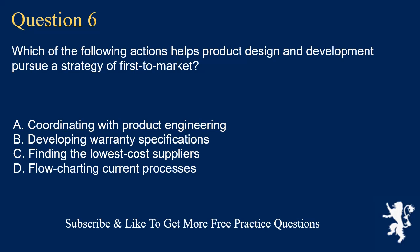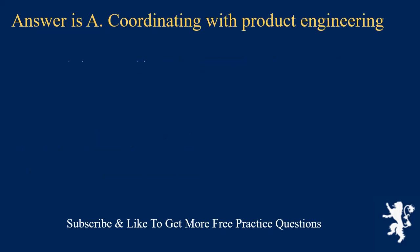Question 6. Which of the following actions helps product design and development pursue a strategy of first-to-market? A. Coordinating with product engineering. B. Developing warranty specifications. C. Finding the lowest cost suppliers. D. Flowcharting current processes. Answer is A. Coordinating with product engineering.